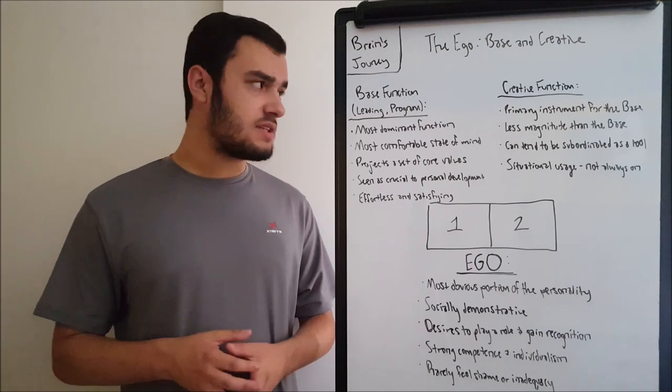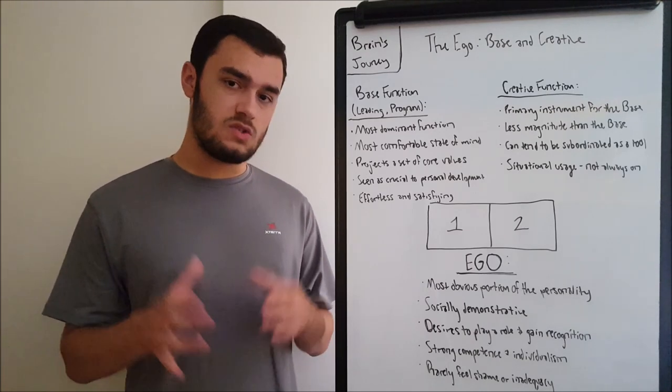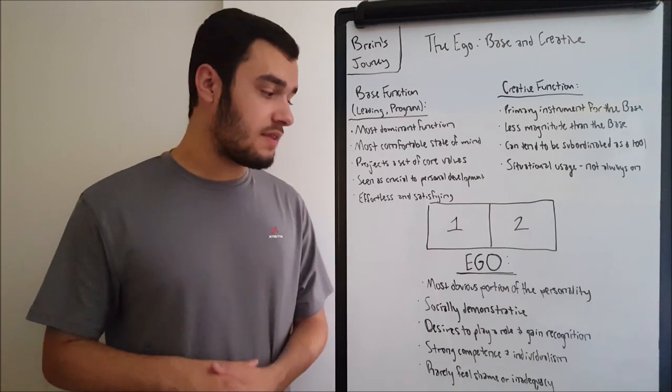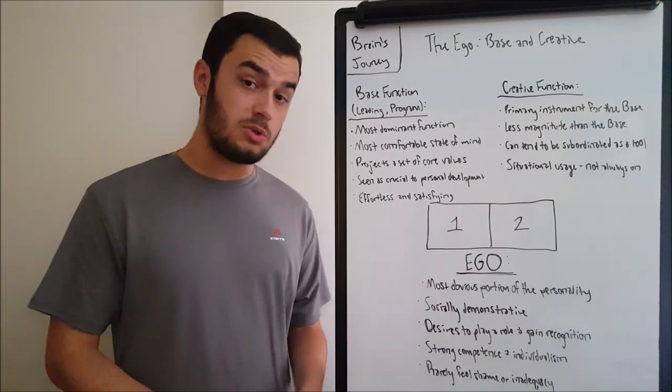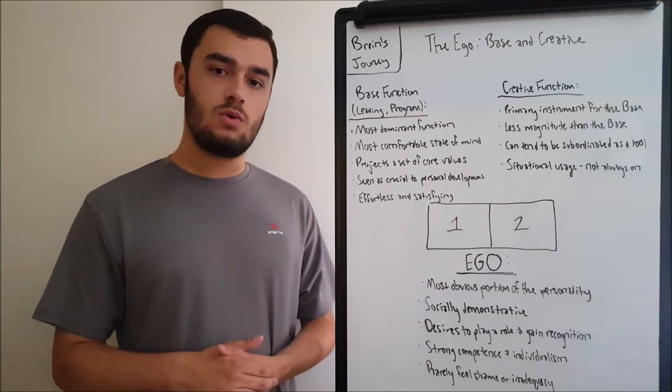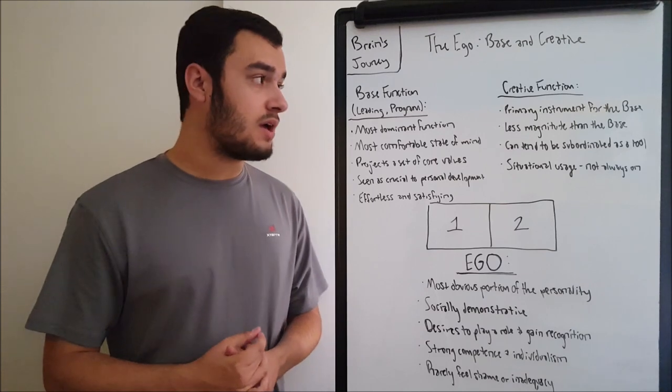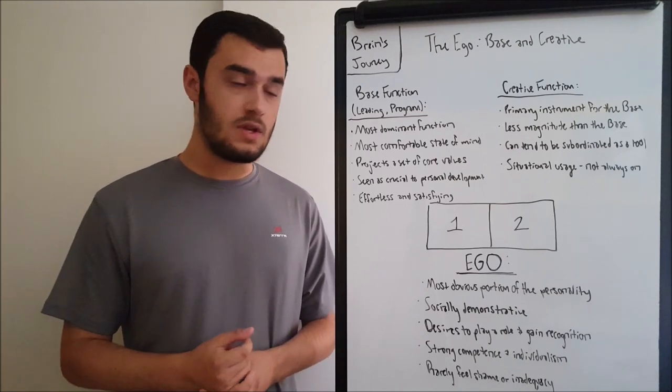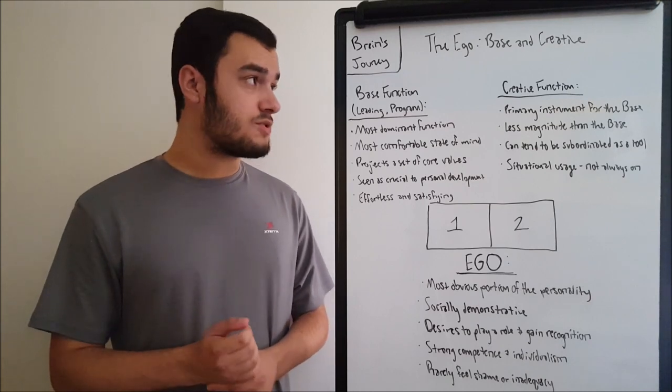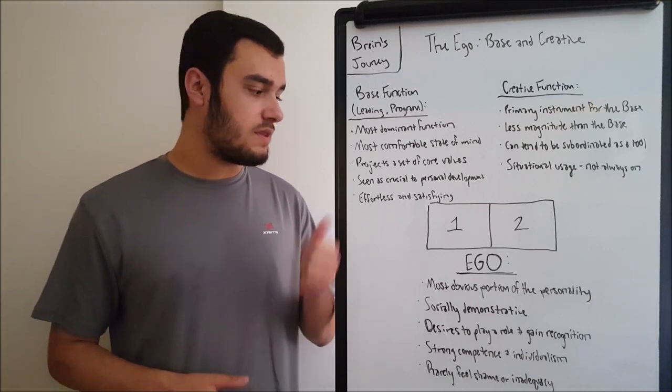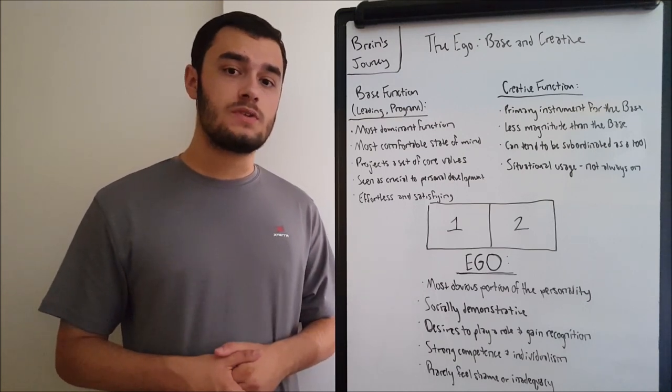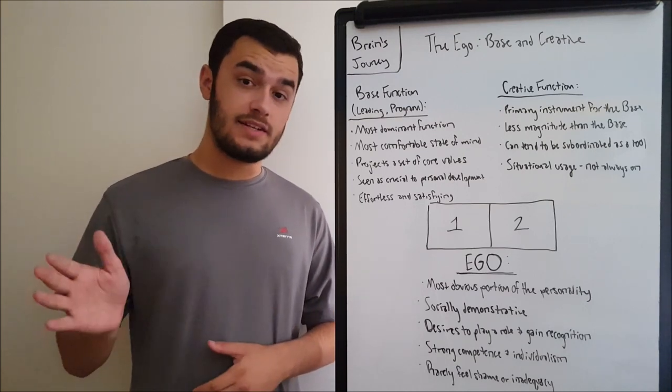So yeah, we've gone over the basics of base function, the dominant, the center of the personality. The creative, the main application for the base. And then the ego, putting it all together. The most obvious portion of the personality. Next video will be up on Tuesday and it will be on the super ego functions, the role and the polar, also known as the vulnerable. So stay tuned for that. If you did enjoy the video, make sure to hit that like button. Comment if you have any observations to make or questions. And I will see you all in the next lecture.